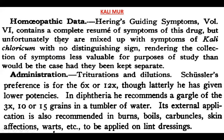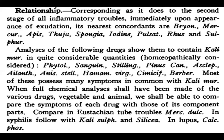This is a very important relationship of this remedy. Corresponding to the second stage of inflammation, immediately upon appearance of exudation, its nearest concordants are Bryonia, Mercurius, Apis, Thuja, Spongia, Iodium, Pulsatilla, Rhus Tox, and Sulphur. These are very closely related remedies to Kali Muriaticum.